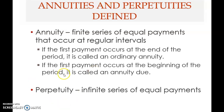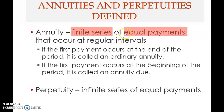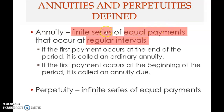We'll look at annuities and perpetuities. An annuity is a finite series — meaning limited — a series of cash flows of equal payments that occur at regular intervals. The total duration and the interval between payments are both fixed, and the payment itself is also fixed.